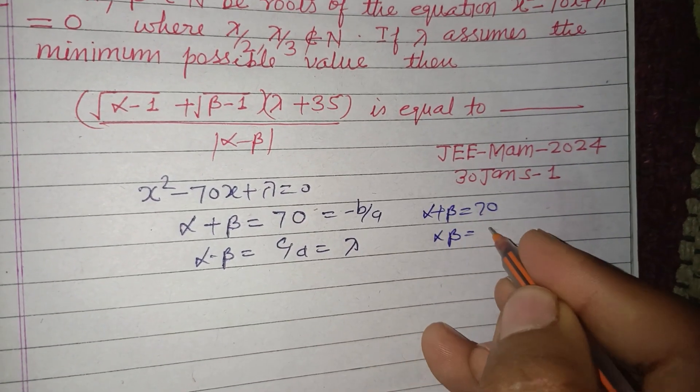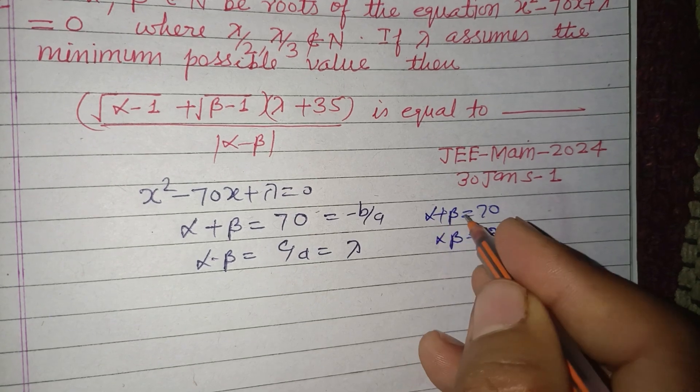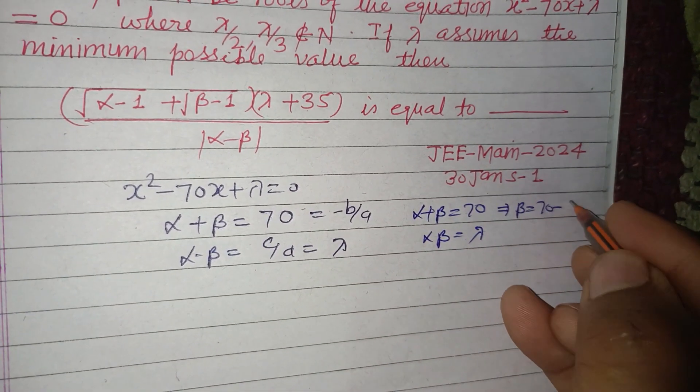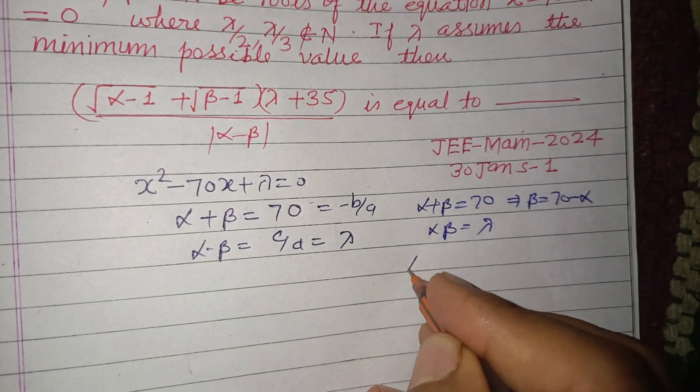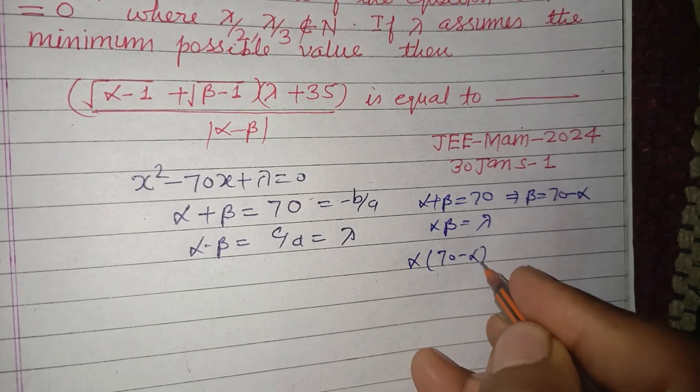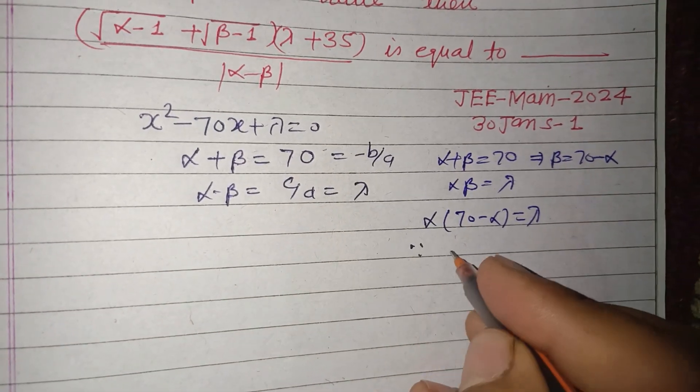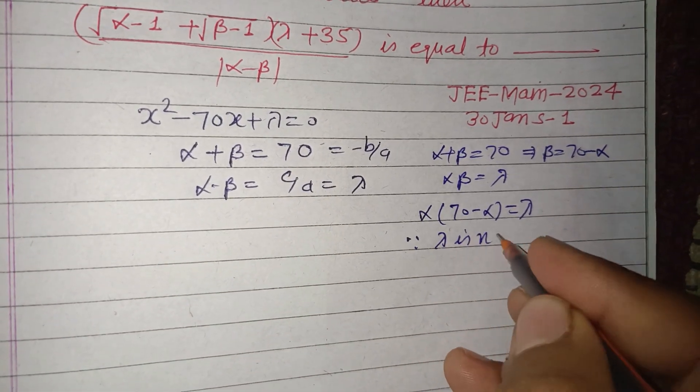We can put the value beta = 70 - alpha, so alpha(70 - alpha) = λ. Since λ is not divisible by 2 and 3, and also their multiples 4 or 6, we take alpha = 5.